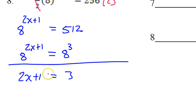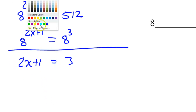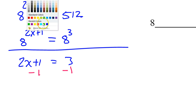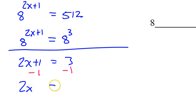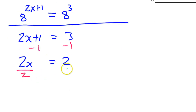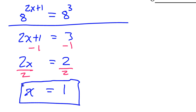The bases are equal, the powers are equal — we just set the exponents equal. 2x plus 1 equals 3. Solve: 2x equals 2, so x equals 1.